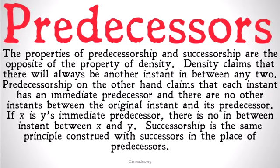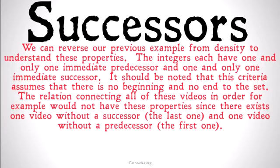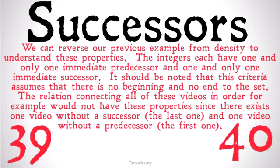Successorship, on the other hand, is going to be the same principle, but construed with successors in the place of predecessors. Basically, every instant has an immediate successor, an instant that immediately follows it. We can reverse our previous example with numbers from density to understand these properties. The integers each have one and only one immediate predecessor and one and only one immediate successor. So 39 has one and only one immediate successor — that's 40 — and 40 has one and only one immediate predecessor — that's 39.